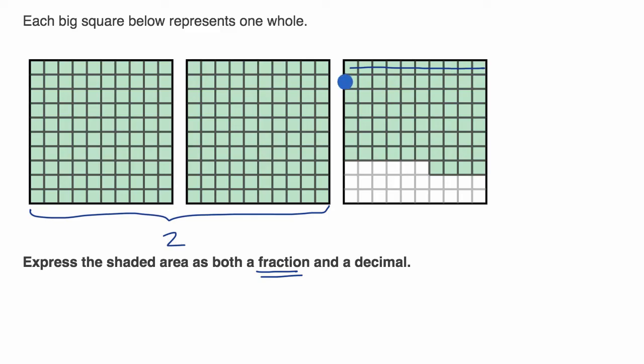Let's see, you have 10, 20, 30, 40, 50, 60, 70. And then you have 71, 2, 3, 4. We can see that 74 of the hundredths are filled in.